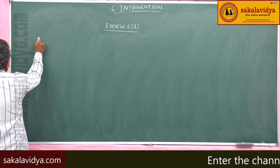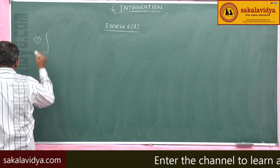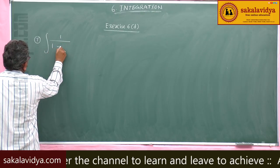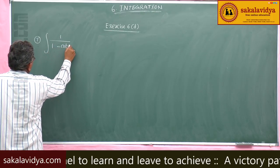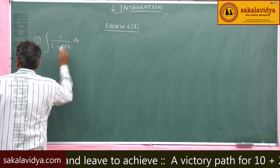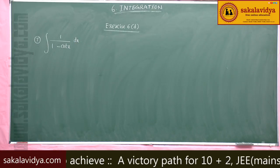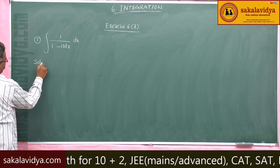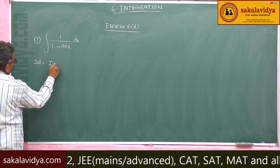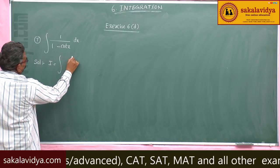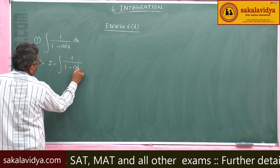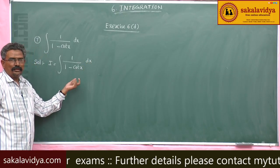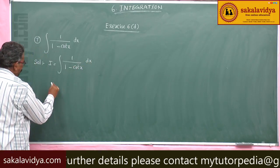Seventh one: integral of 1/(1 - cot x) dx. The solution: I equals integral of 1/(1 - cot x) dx. Now, cot x is equal to cos x / sin x.